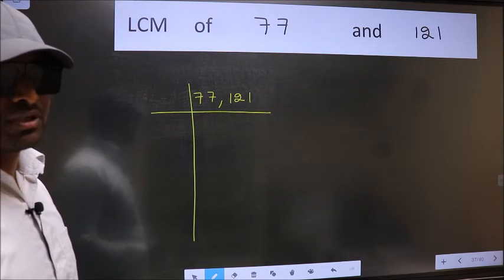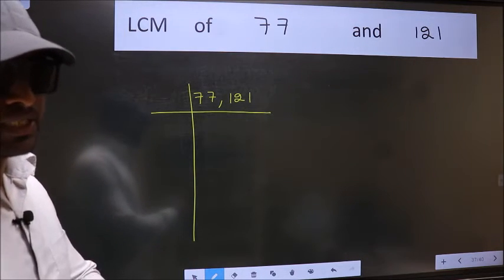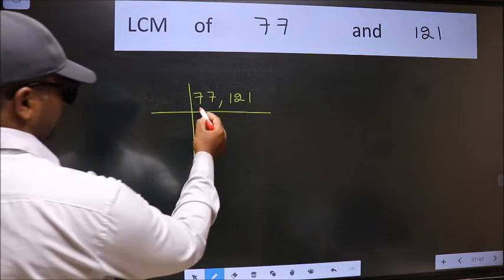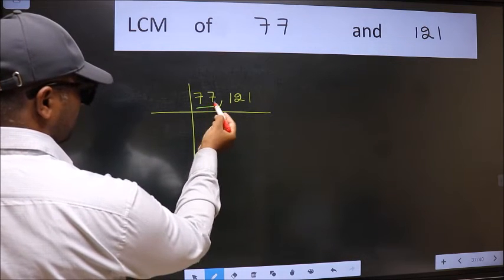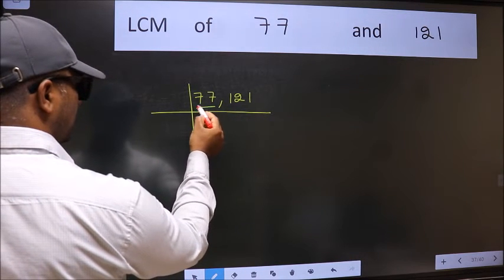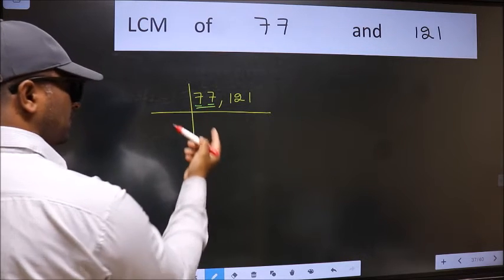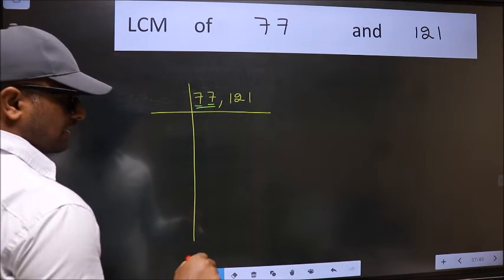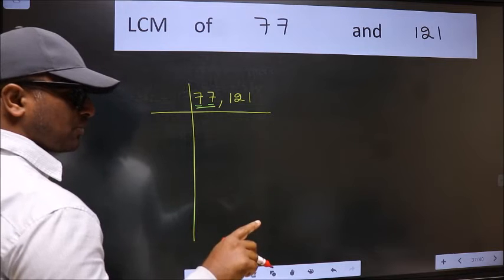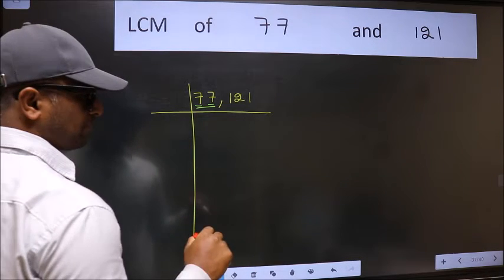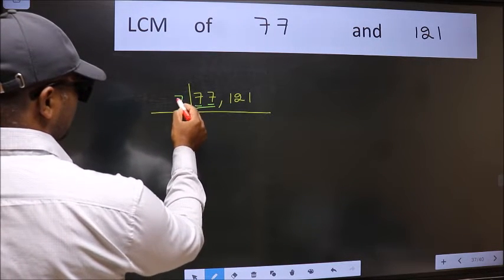Now you should focus on the first number, which is 77 here. You observe this number, each digit is 7. So this number is divisible by 7. And most important, 7 is the prime number. So take 7 here.